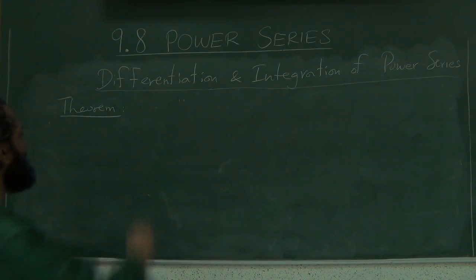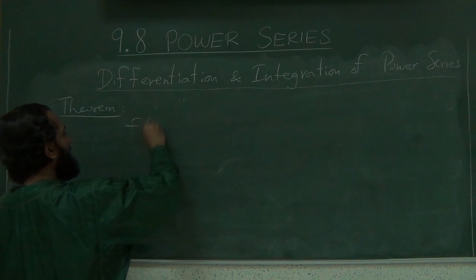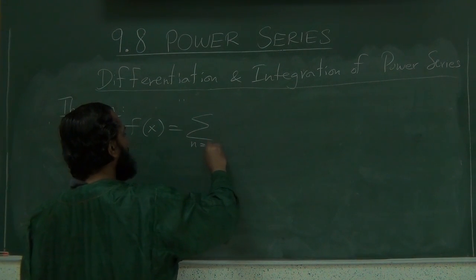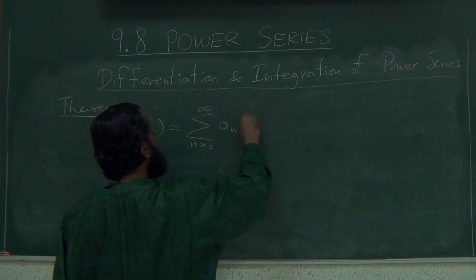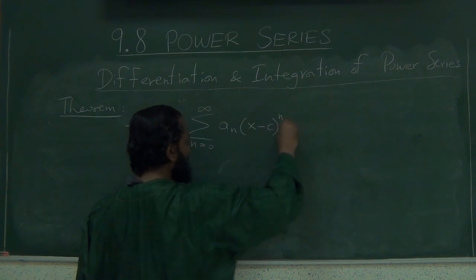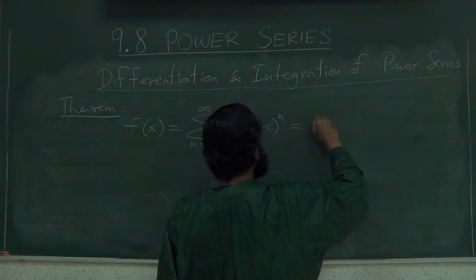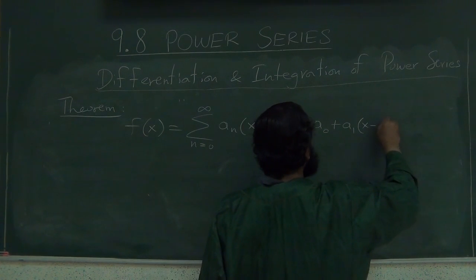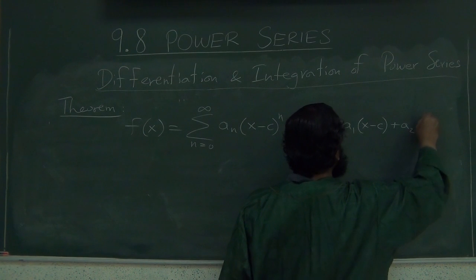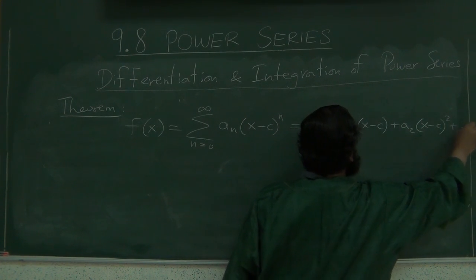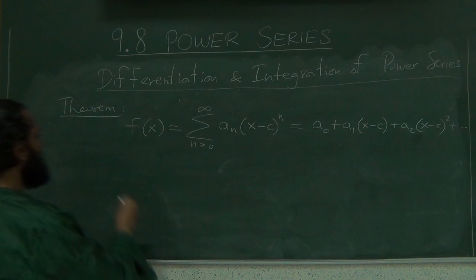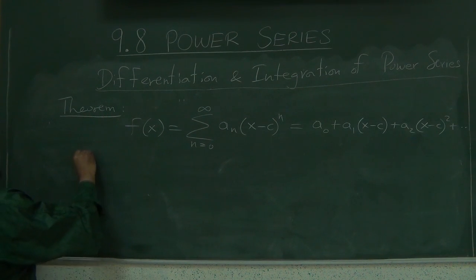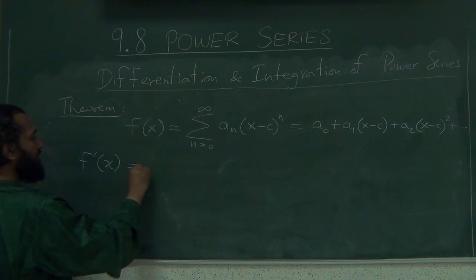So let's write down the original series, f(x) equals 0 to infinity, a_n (x minus c) to the n. Let's write down a few terms so we can see how this works. This is the original power series, the function defined by the power series. So then the derivative would have this power series, alright?